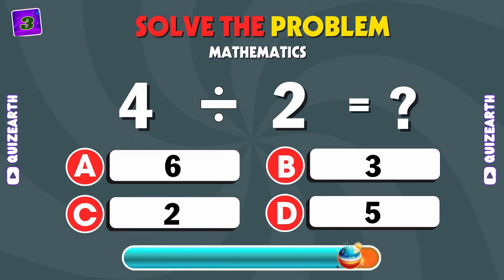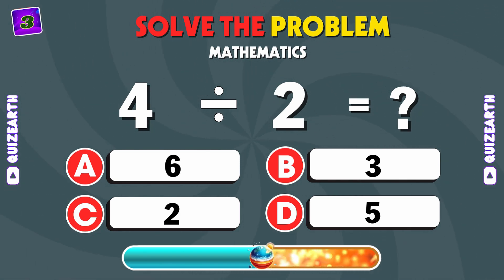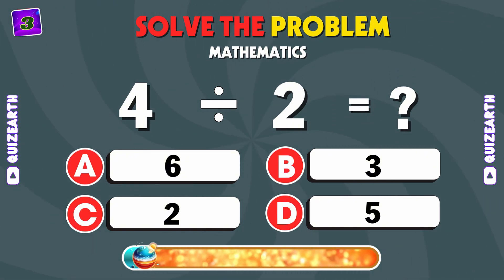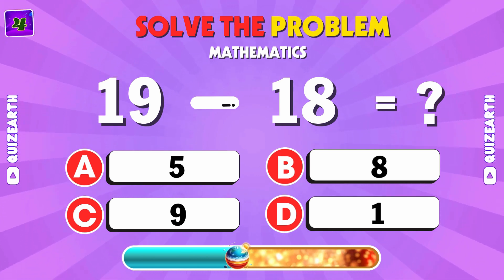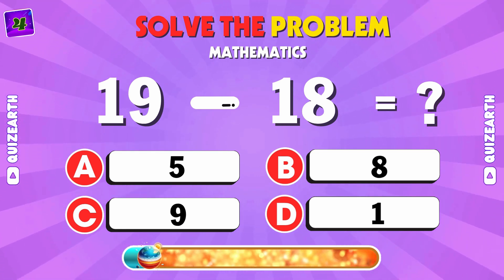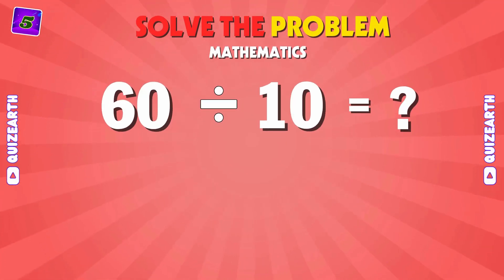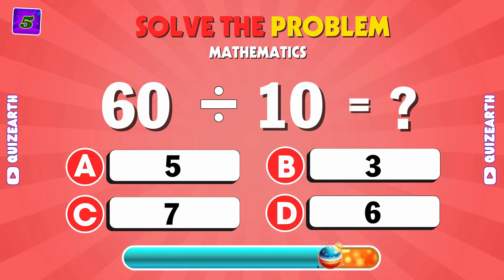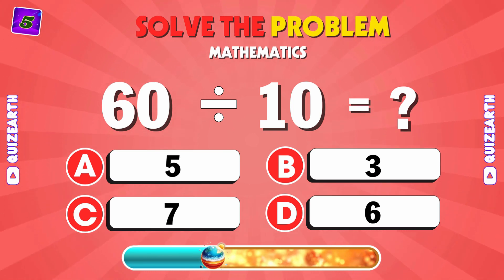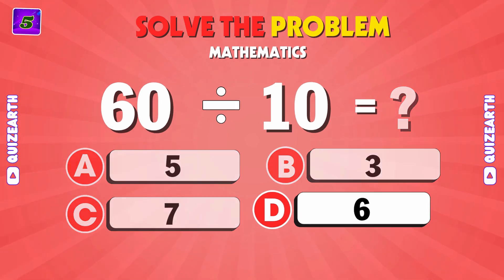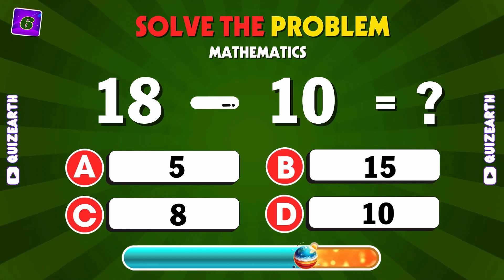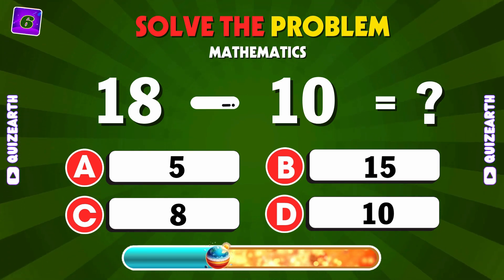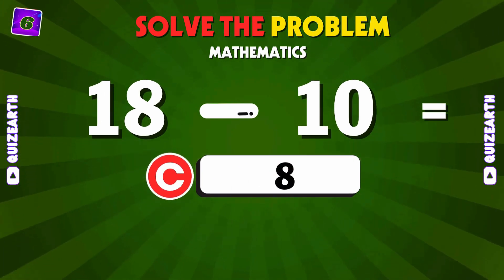4 divided by 2 — what is it? C: 2. Subtract it. What is 19 minus 18? D: 1. 60 divided by 10 equals what? D: 6. What's 18 minus 10? C: 8.